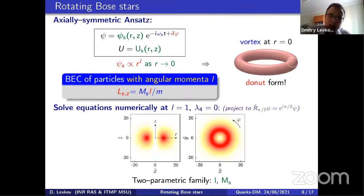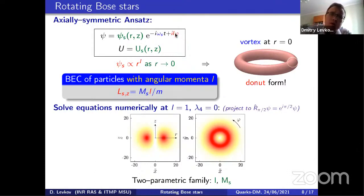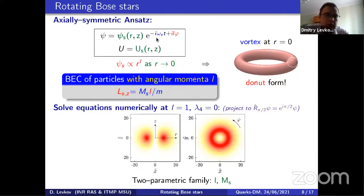So for boson stars, we must drill a hole (ψ = 0) through the condensate to make it rotate — this costs energy. The axially symmetric ansatz takes a spherical star and drills a vertical hole through it, giving a donut shape. Here ψ depends on axial coordinates r and z, has azimuthal dependence e^{ilφ} for the z-component of angular momentum l, and the gravitational field is also axially symmetric. You substitute this into the equations and solve numerically.